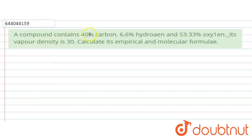The question says that a compound contains 40% carbon, 6.6% hydrogen, and 53.3% oxygen. Its vapor density is 30. Calculate its empirical and molecular formula. So first we need to calculate the empirical formula, and empirical formula is generally calculated using a table.